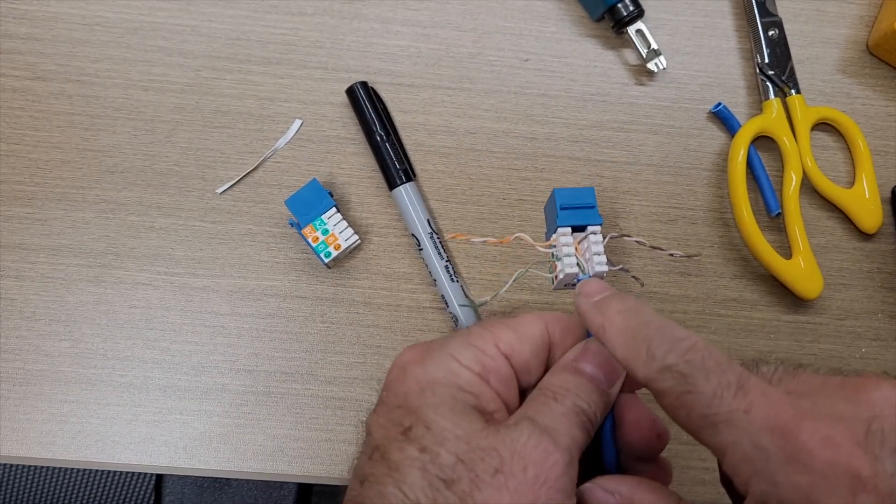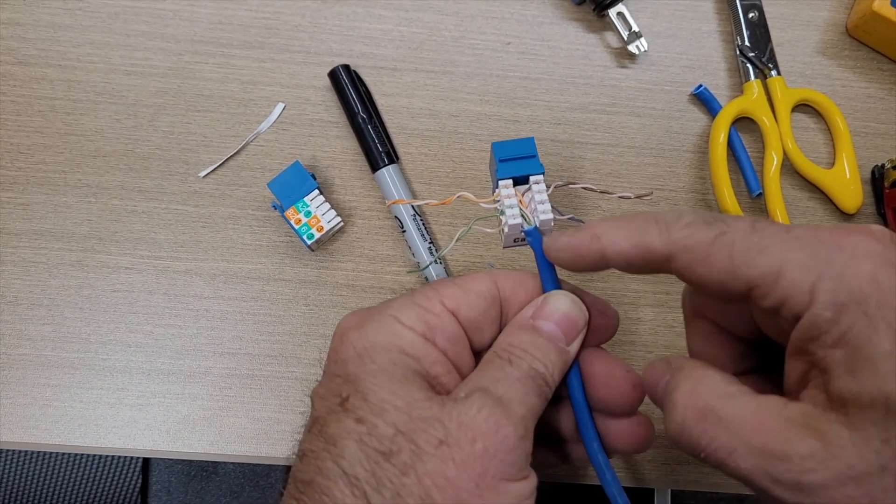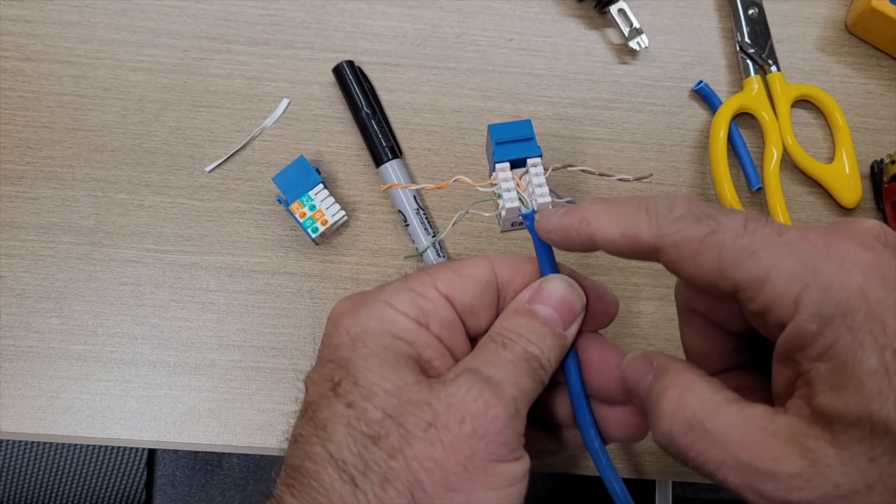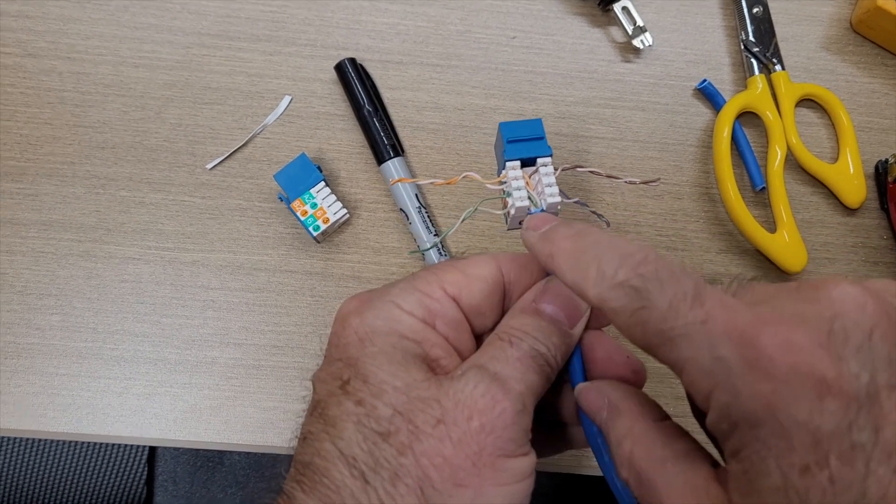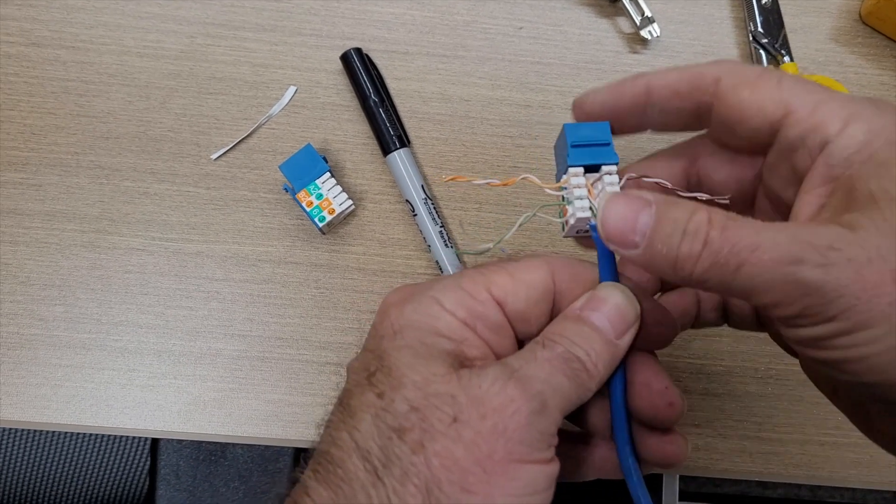You see how the jacket ends right as it's entering the body of the keystone jack? That's important. You don't want a lot of extra space with the exposed wires. You want that jacket to come up to the edge as much as possible. It doesn't have to exactly touch, but you really don't want a lot of extra space between those two.